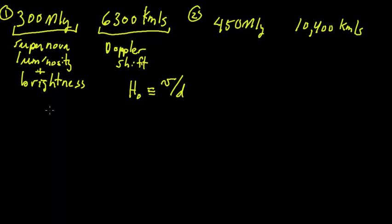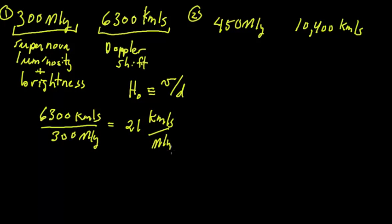For example, if I take 6300 kilometers per second divided by 300 mega light years, what I get is about 21 kilometers per second per mega light year. There's no good unit for it, that's just it.